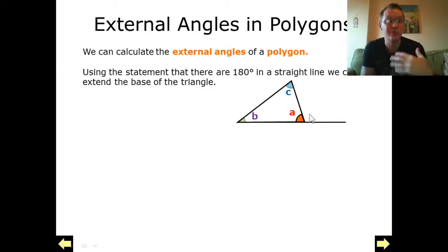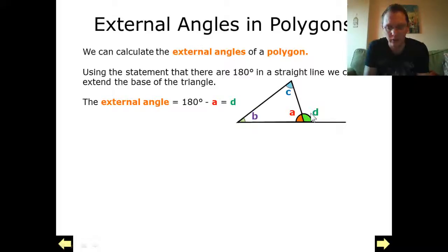This is all on the basis of angles on a straight line which add up to 180 degrees. So here we've got 180 take away A, that will give me my angle D, which is my external angle.